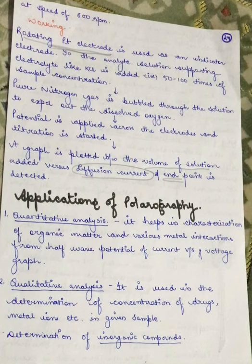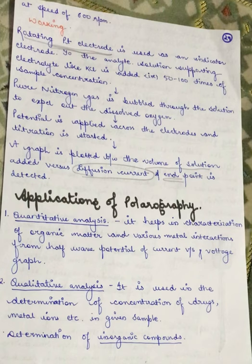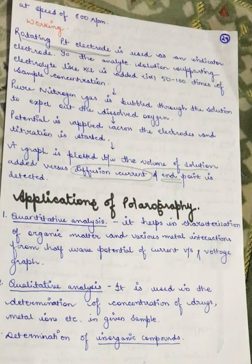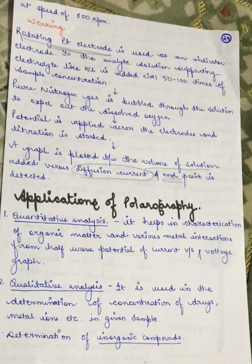The applications of polarography include quantitative analysis, which helps in the characterization of organic matter and various metal interactions from the half-wave potential of the current versus voltage graph, as well as qualitative analysis. Polarography is used in the determination of the concentration of drugs, metal ions, etc. in a given sample. It is also used for determination of inorganic and organic compounds, estimation of dissolved oxygen, and pharmaceutical applications such as the analysis of tetracycline and sulfonamides.